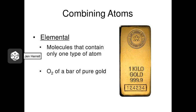There are different kinds of combinations of atoms that exist. If molecules form that involve only one kind of atom, we call that an element or an elemental molecule. A great example of this is O2, or oxygen gas that we breathe, because it's only made of oxygen atoms. Or a bar of pure gold would only be made of gold atoms.